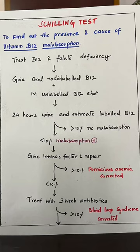Schilling's test is used to find out the presence and cause of B12 malabsorption. First, treat the patient with B12 and folate supplements, then give oral radiolabeled B12 along with intramuscular unlabeled B12. After that, a 24-hour urine sample should be collected and estimated for labeled B12.